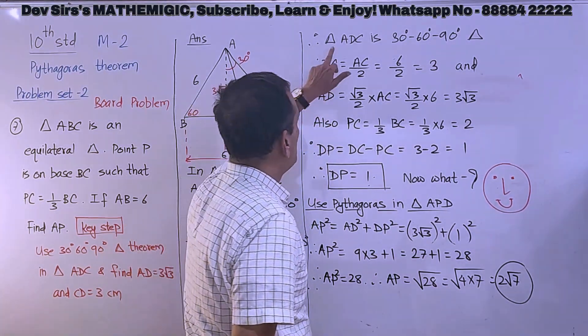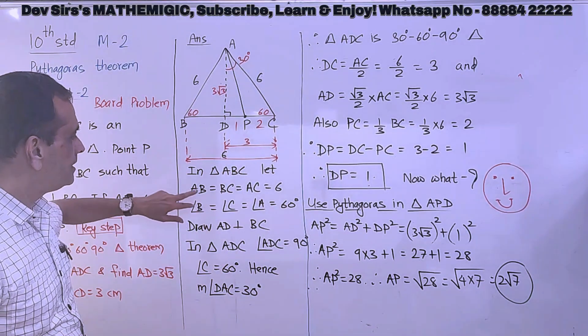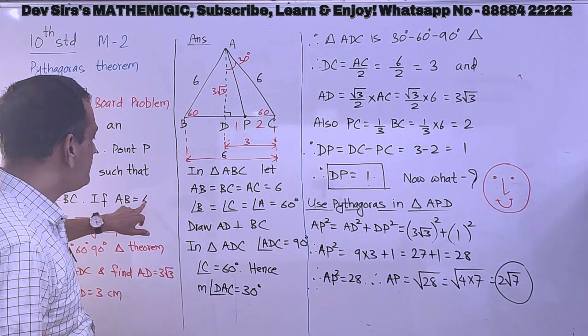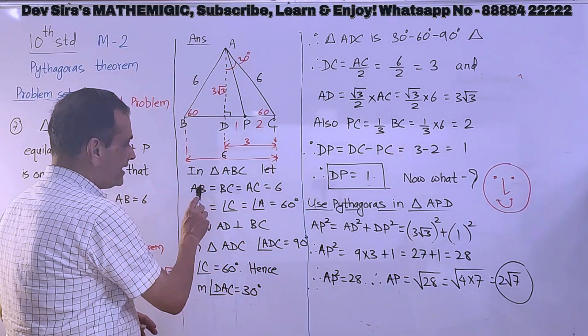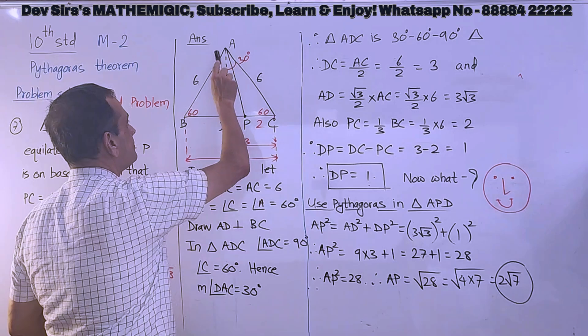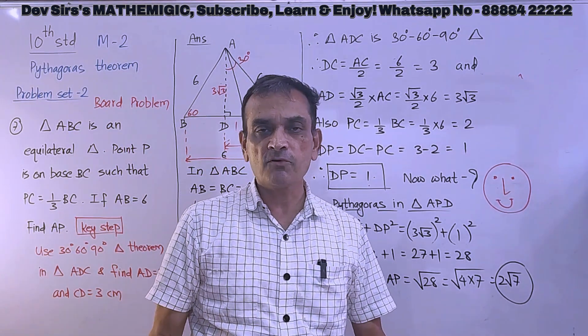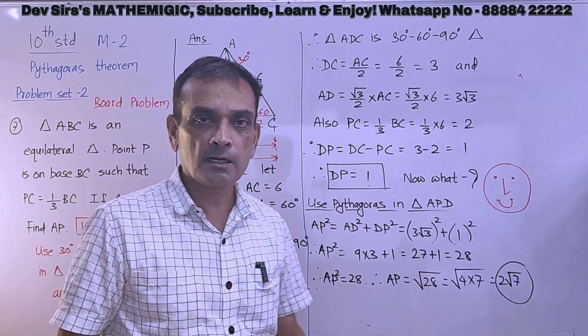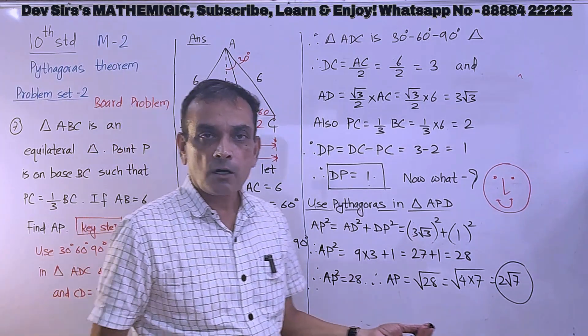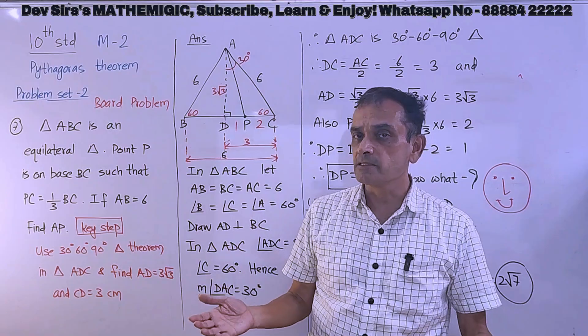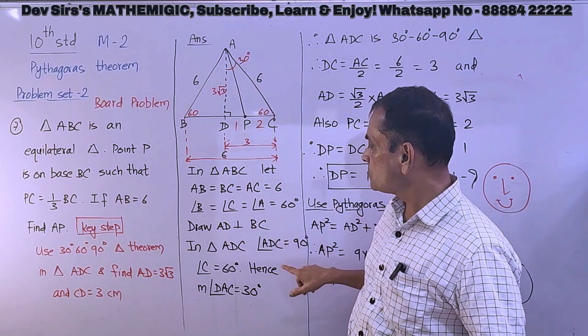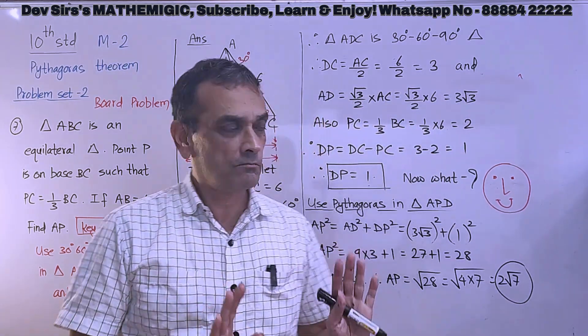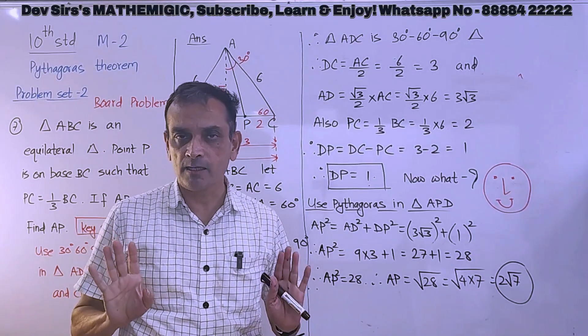Now the thing is, in triangle ABC, you are given AB equal to 6. Because AB is 6 and the triangle is equilateral, all sides are equal. AB equal to BC equal to AC equal to 6, because it is an equilateral triangle. That is the first step. Each angle is 60 degrees, so angle B is 60, angle C is 60, and angle A is also 60. All three angles are 60. So first two steps are based on definition of equilateral triangle.